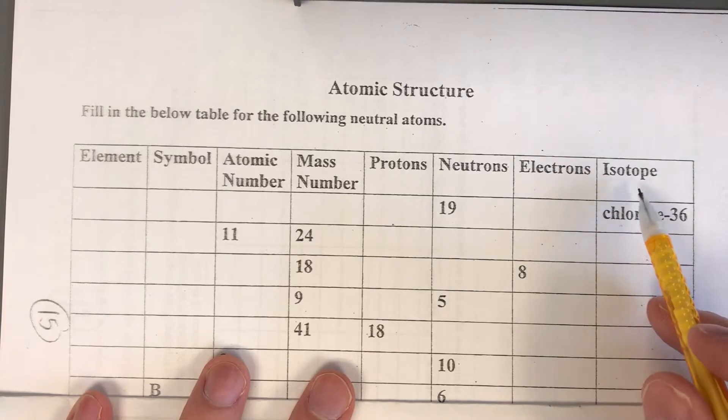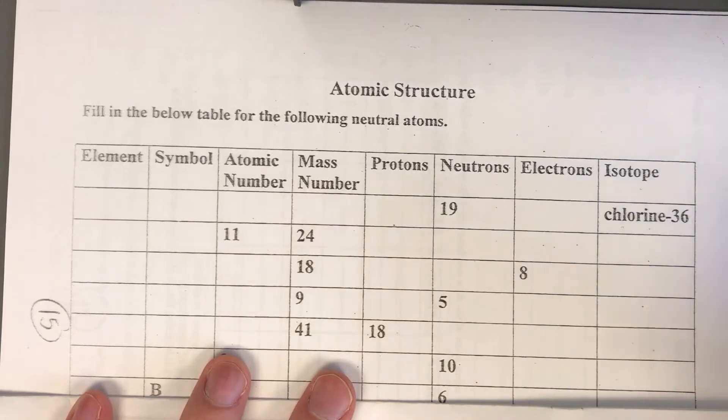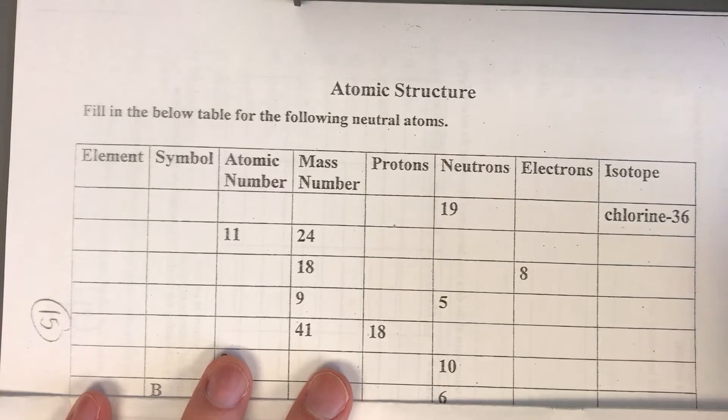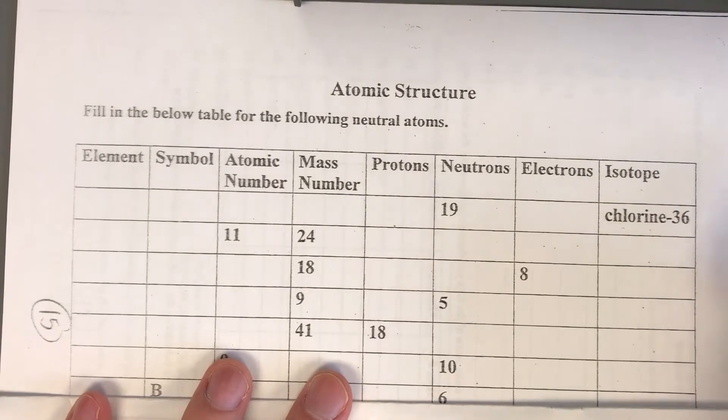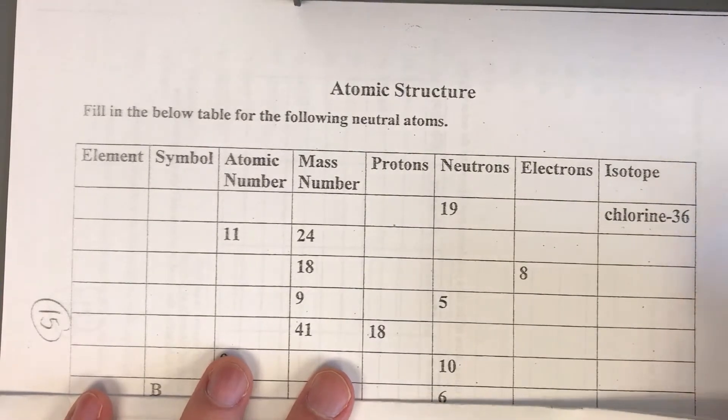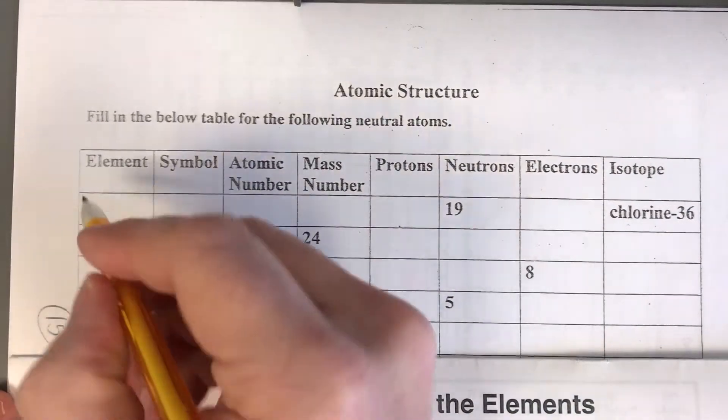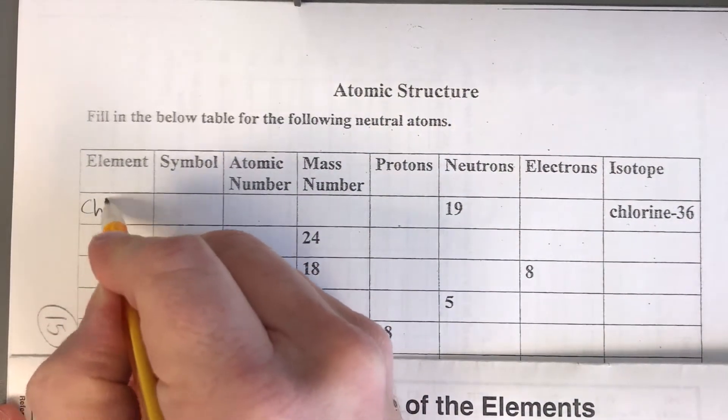We know that this is chlorine because it says it's chlorine. Now remember an isotope is the same element or the same type of atom but they're slightly different in mass because of the different number of neutrons that are present. Not every atom has the same number of neutrons.